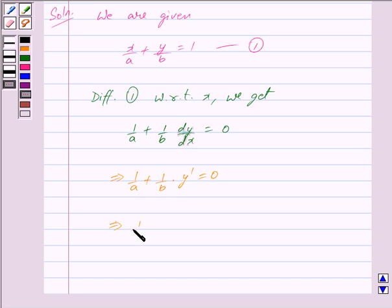This implies (1/B)y' = -1/A, which further implies y' = -B/A. We mark this as equation 2.